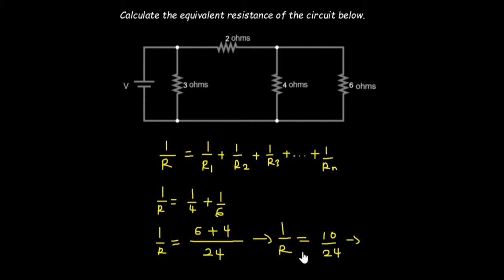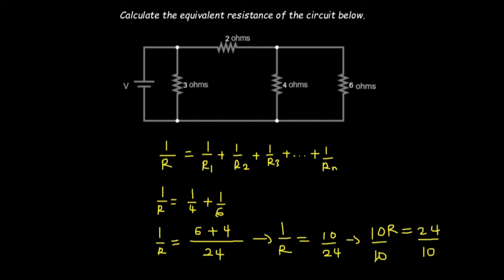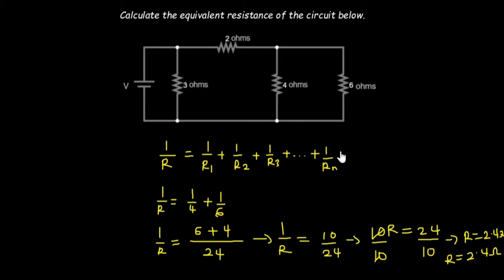Simplifying further with cross multiplication: 10R equals 24. Dividing both sides by 10, the R equals 24 divided by 10, which is 2.4 ohms. So the equivalent resistance for the 4 ohms and 6 ohms resistors is 2.4 ohms. Instead of using these two resistors we can represent them with a single 2.4 ohm resistor.